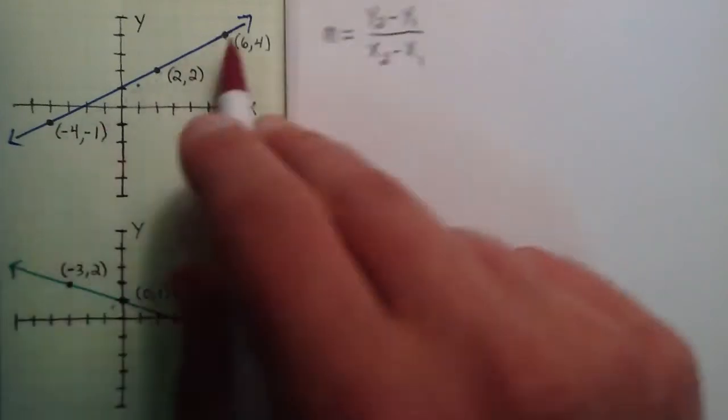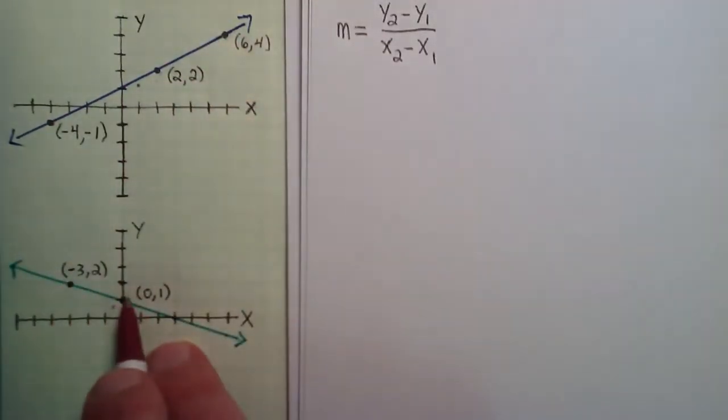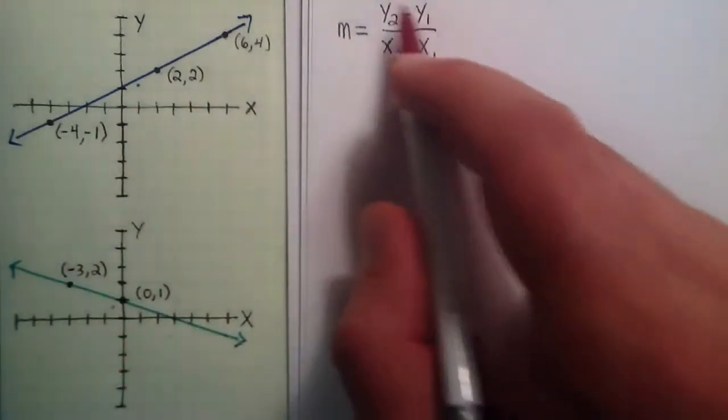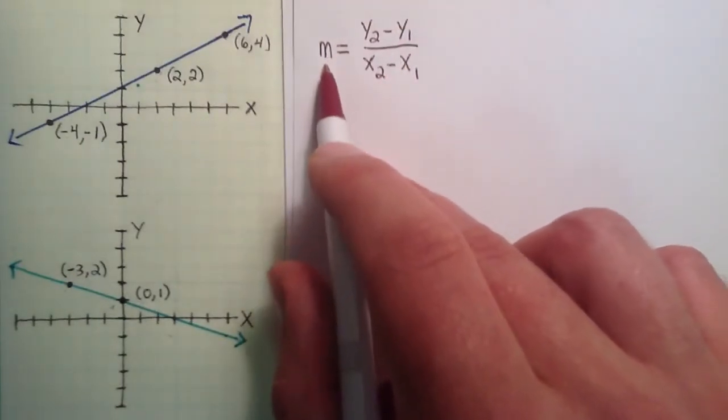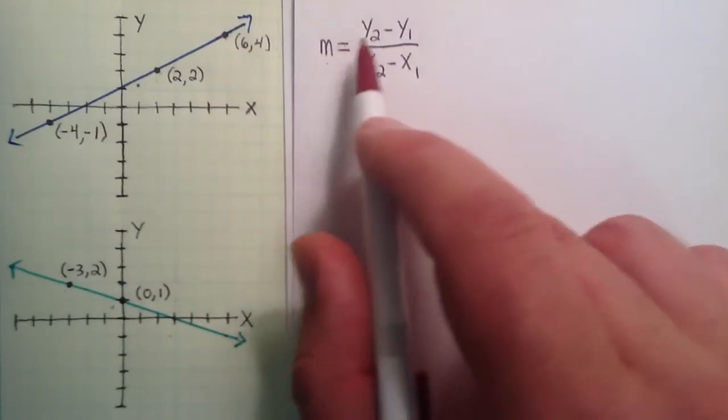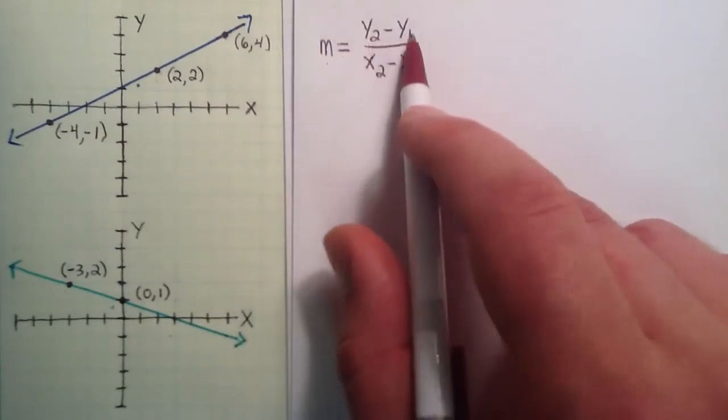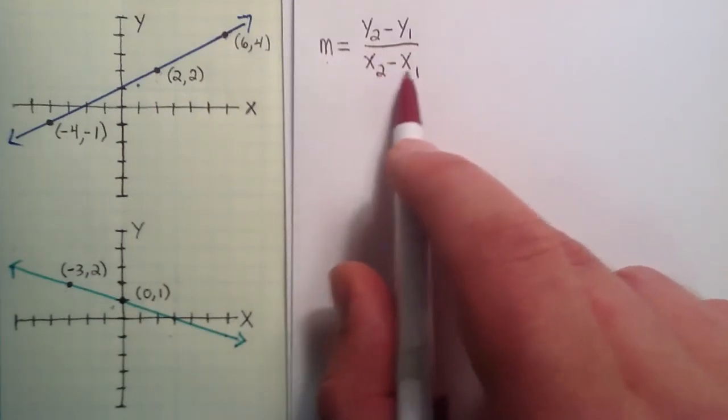So I went ahead and drew a couple lines here, and then I listed a few points that fall on each of these lines. We'll be using the points that fall on these lines to determine their slopes. So this right here is the equation of the slope. m is usually what we refer to as the slope, and it's simply equal to the change in the y components of two points divided by the change in the x components of two points.